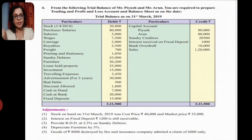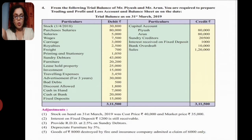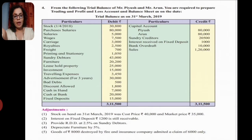Next, provide RDD at 2.5% on debtors - calculate that. Next, depreciation on furniture at 5% - calculate that as well. Our last adjustment is a new one: goods of rupees 8,000 destroyed by fire and the insurance company admitted a claim of rupees 6,000 only. Each adjustment has its effect on the final accounts.